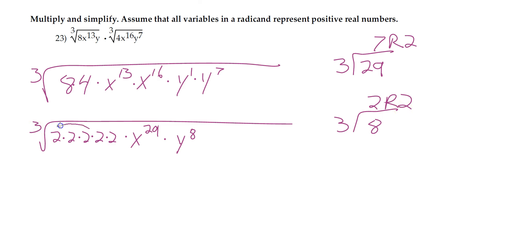Now for cube root, we're looking for groups of 3. There's a nice group of 3 twos, so I can pull a 2 out. I can pull x to the 9th out, and a y squared out. These are the whole numbers. It's how many I can pull out.